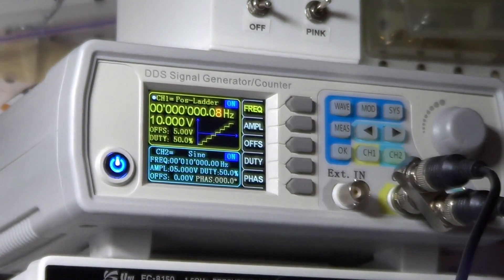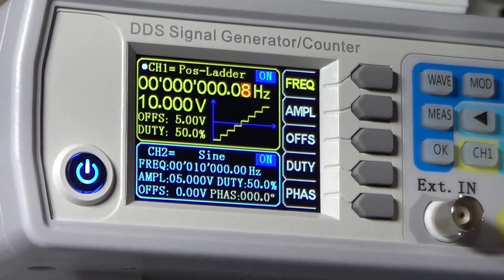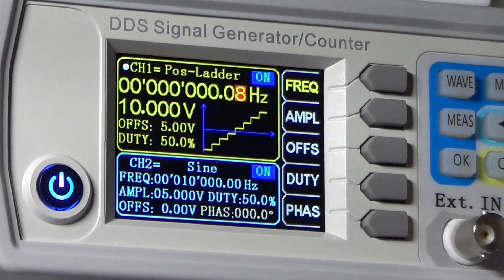The function generator is configured to provide a ladder-shaped signal, going from 0V to plus 10V, and that repeats itself at a frequency of 0.08Hz.